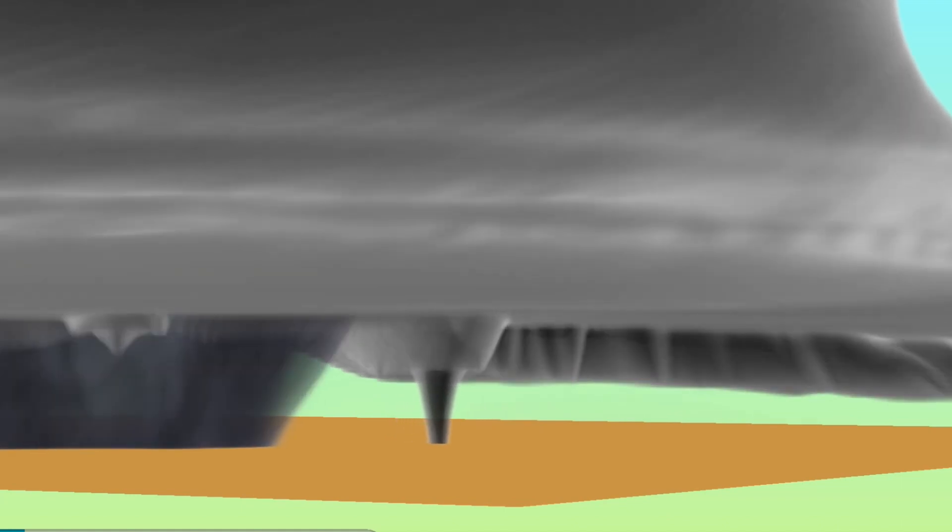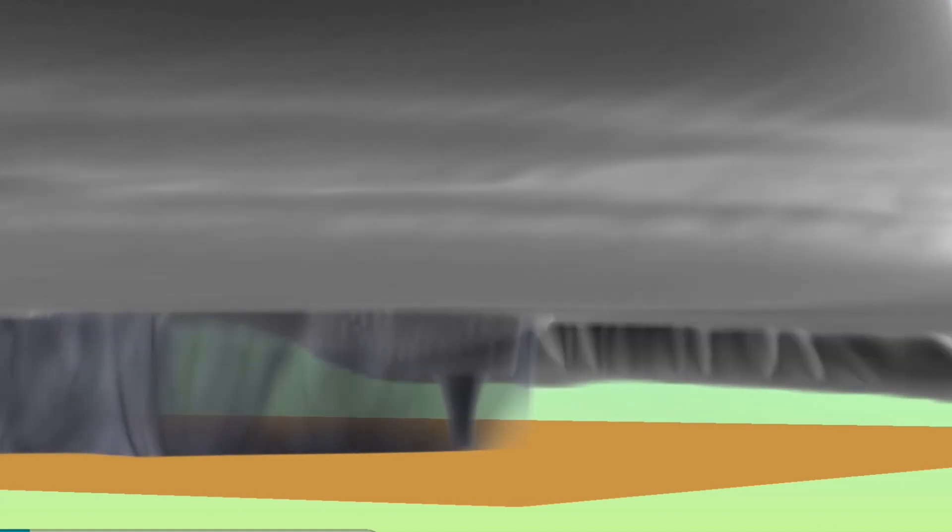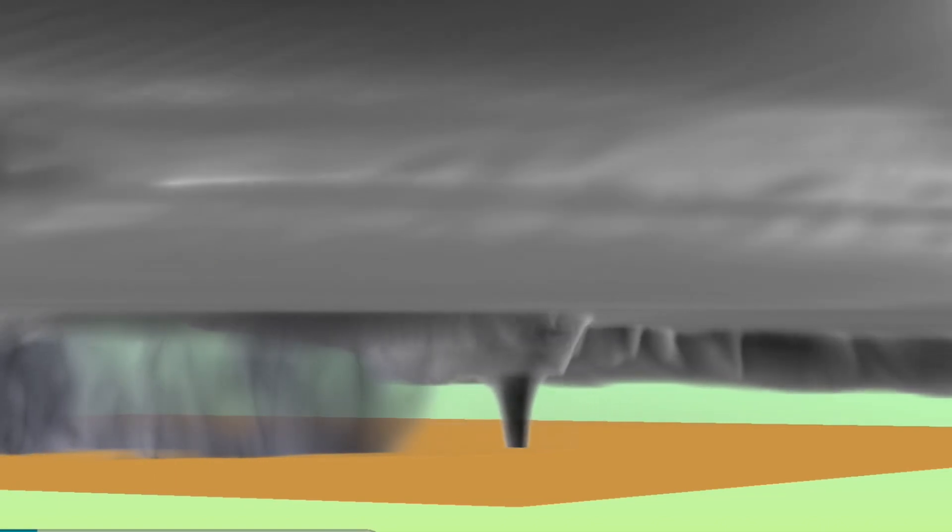We now have a rain curtain that sort of sweeps around the wall cloud. This is something that meteorologists have seen in the field as well. We see evidence of maybe vorticity in what's called the forward flank of the storm. The rain comes and goes.